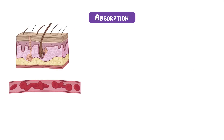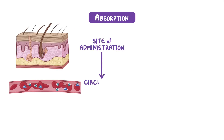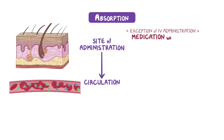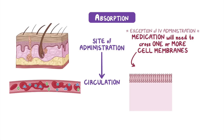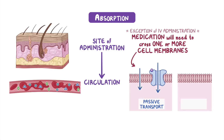Absorption is the process of moving the medication from the site of administration into the circulation. With the exception of intravenous administration, a medication will need to cross one or more cell membranes before it reaches the circulation. Movement across the cell membrane can occur via passive transport, which requires no energy, and active transport, which requires energy in the form of adenosine triphosphate, or ATP.